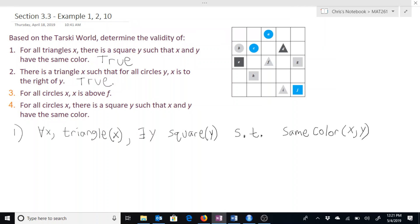This is true. And that written out would be that there exists a triangle x where for every circle y, x is to the right of y.